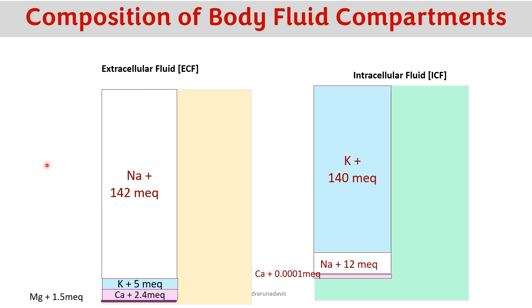Magnesium is around 1.5 milliequivalents in extracellular fluid, but around 20 milliequivalents in intracellular fluid. The key point is that the distribution of cations is very different between the two compartments — the major cation in ECF is sodium, and the major cation in ICF is potassium.